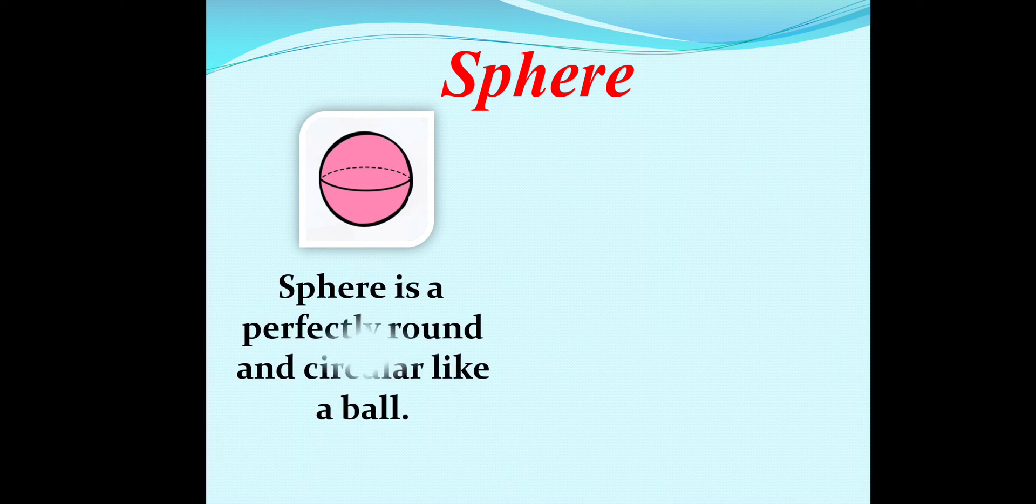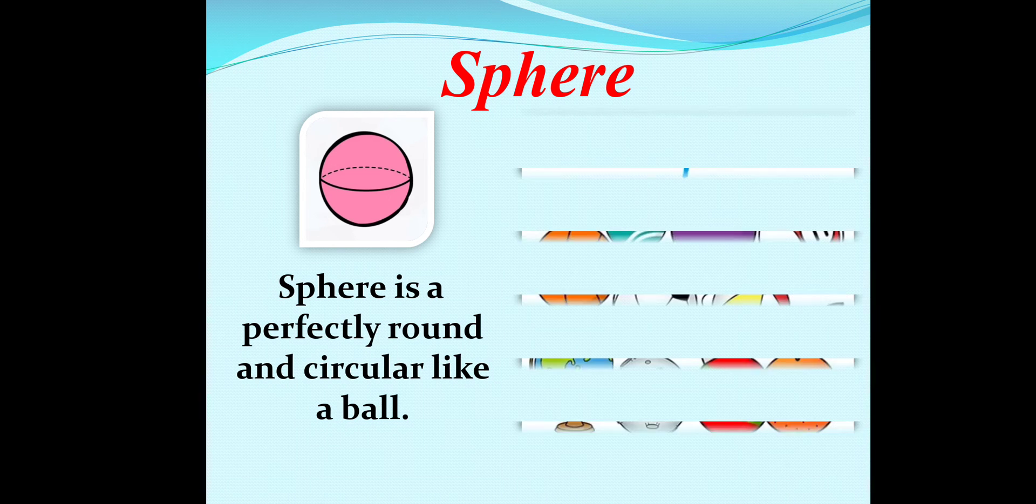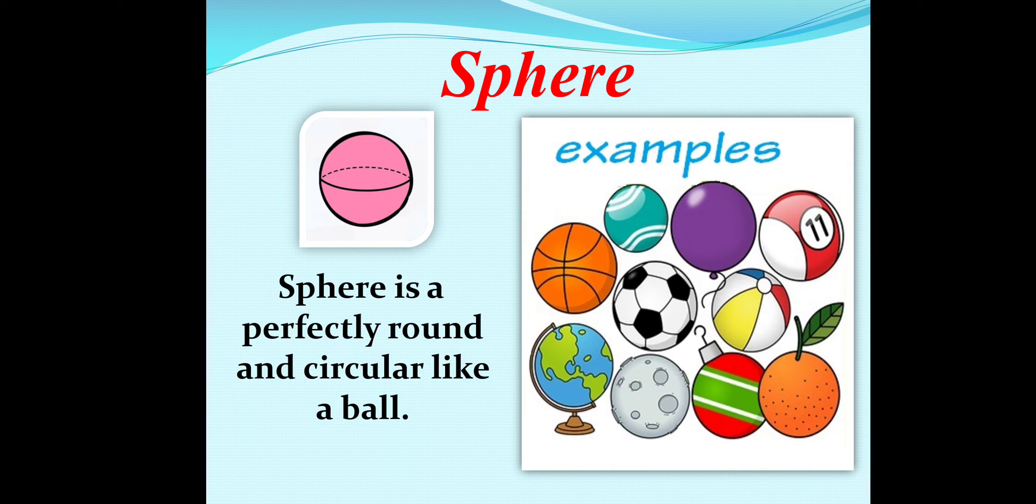Now, let's discuss about sphere. This shape is called sphere. A sphere is a perfectly round circular like a ball. Here are some examples in this image: different types of ball, globe, orange.